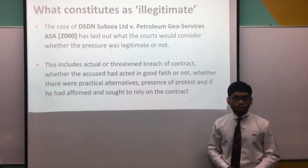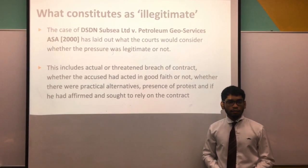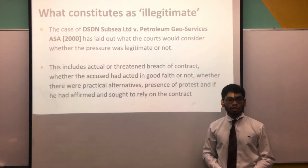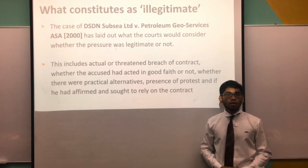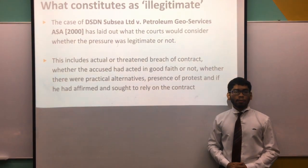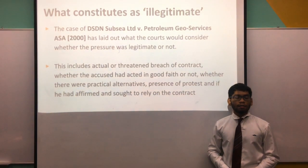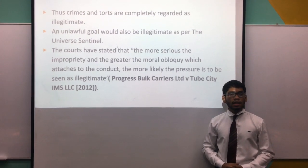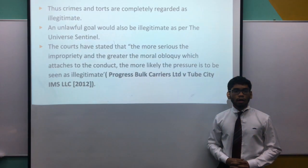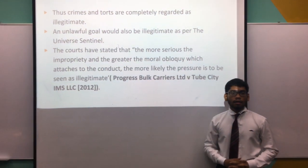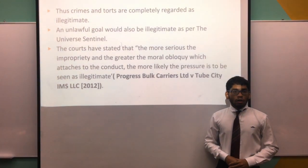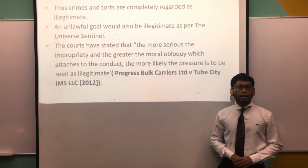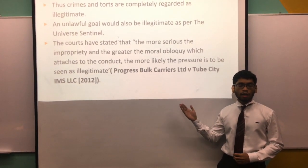What constitutes illegitimate pressure? The case of DSDN Subsea Ltd v Petroleum Geo-Services ASA (2000) laid out what the courts would consider: actual or threatened breach of contract, whether the accused had acted in good faith, whether there were practical alternatives, presence of protest, and whether the individual had affirmed and sought to rely on the contract. Crimes and threats are regarded as wholly illegitimate. An unlawful goal would also be illegitimate as per Universal Sentinel and the obiter in Attorney General. The courts stated that the more serious the impropriety and the greater the moral obloquy attaching to the conduct, the more likely the pressure is to be seen as illegitimate, as in Progress Bulk Carriers v Tube City.